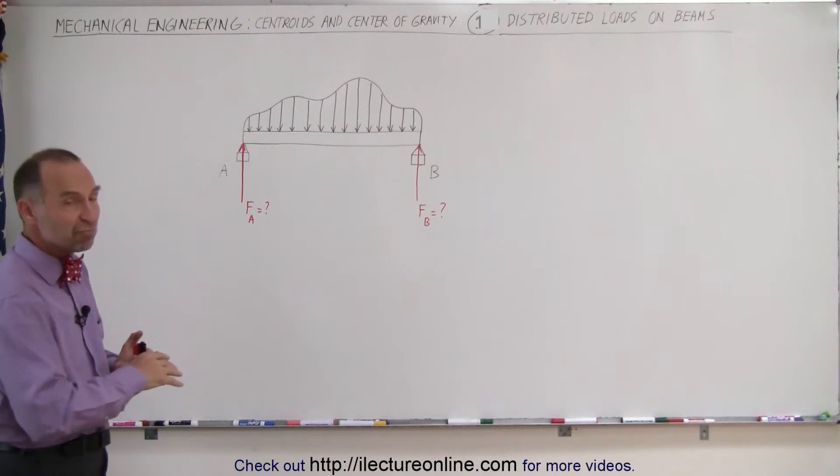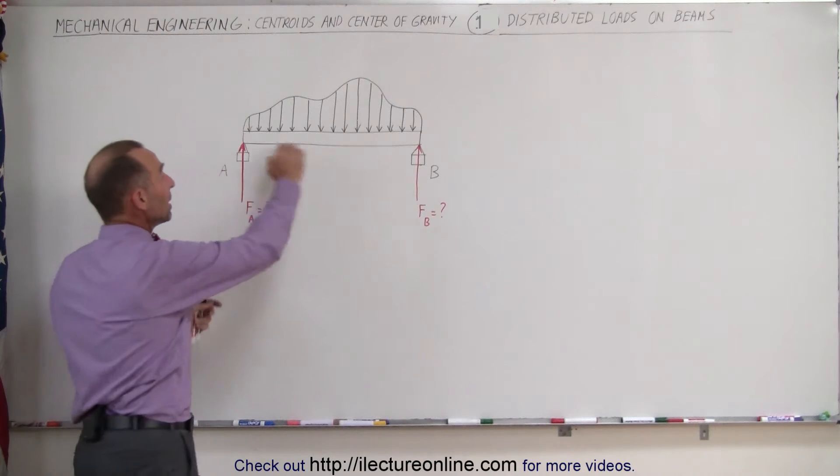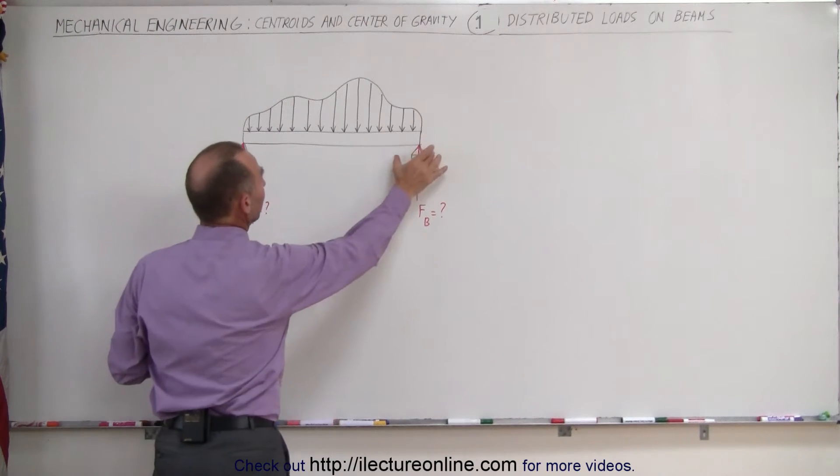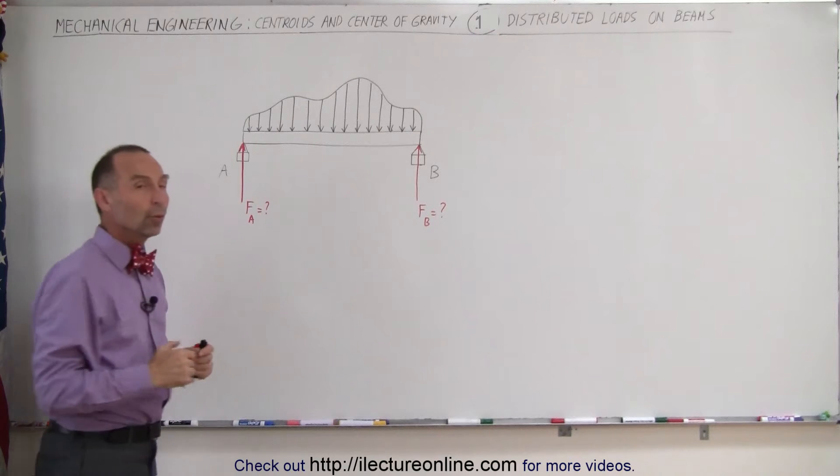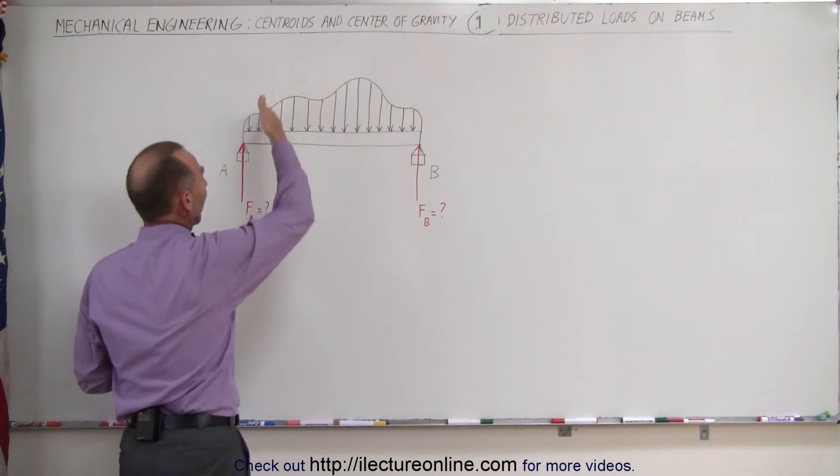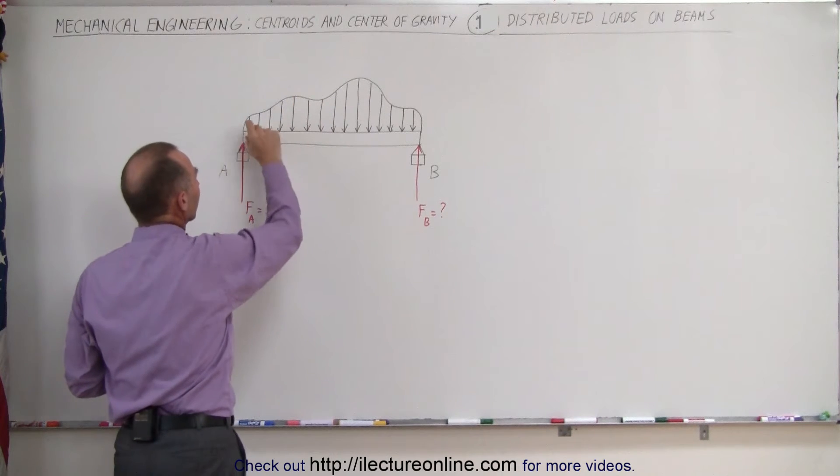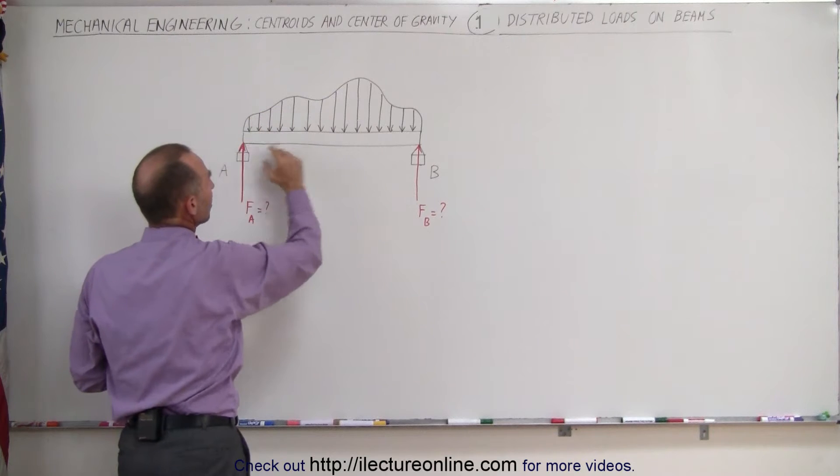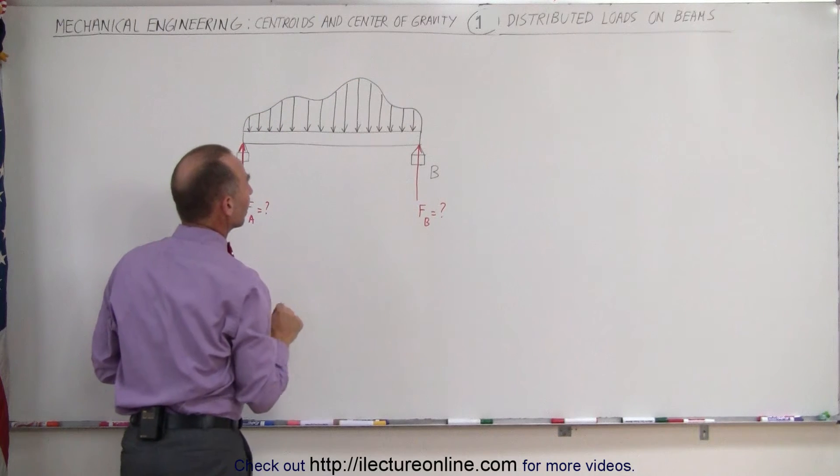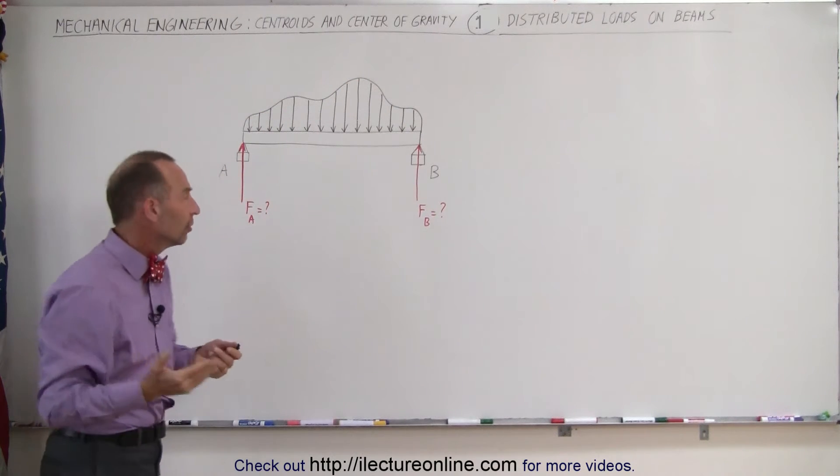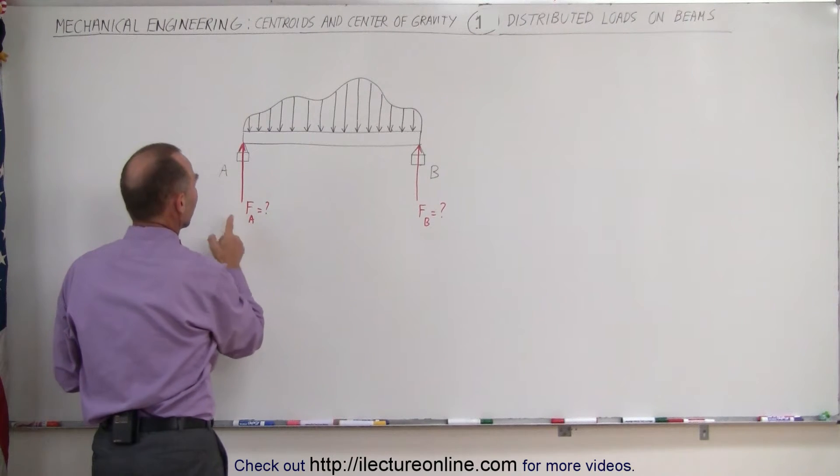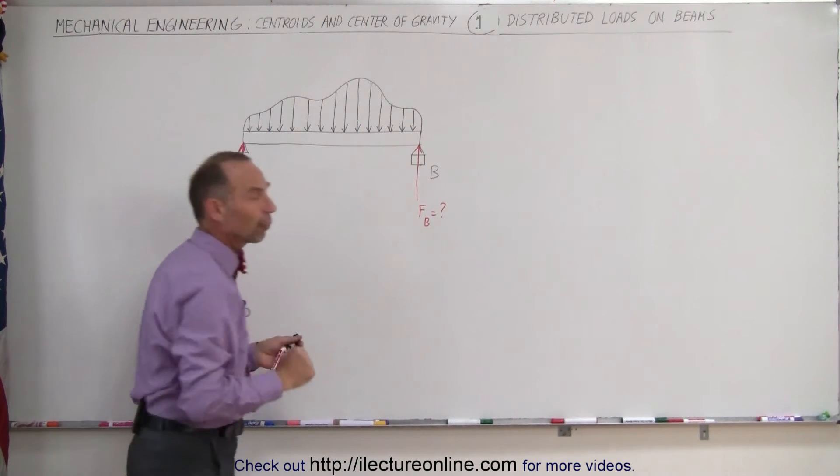Here we have a theoretical example where we have a beam which is supported at A at one end, at B on the other end. And we have variable forces acting on the beam. You can see that there's less force per unit length here, much more force per unit length there. And so how do we find the reactionary force at A and how do we find the reactionary force at B?